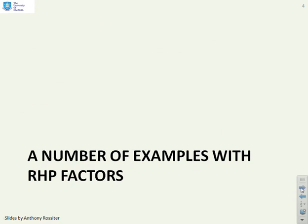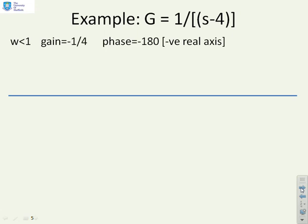We're going to go through a number of examples with right half plane factors. First example, G equals one over s minus four. For small omega, the gain is minus a quarter. In fact, if you get rid of the minus, clearly it's just a quarter and the phase is minus 180.